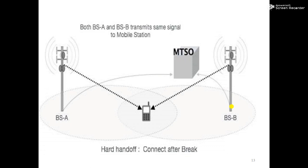As power from the first base station decreases, the mobile sends a pilot strength message, the first base station stops transmission and releases the channel, and traffic continues on the second base station. In a CDMA cellular system, communication does not break during handoff because switching of frequency or time slot is not required. The Walsh sequence is part of orthogonal codes; unlike PN, Gold, and Kasami sequences (which are shift-register sequences), orthogonal codes ensure the correlator output is zero except for the desired sequence.